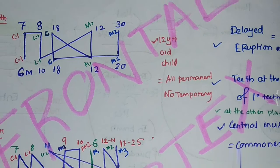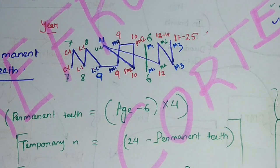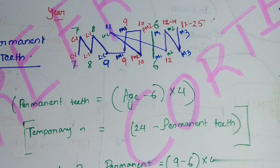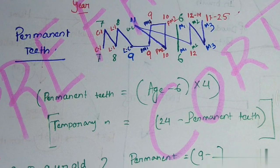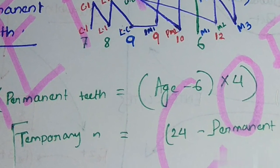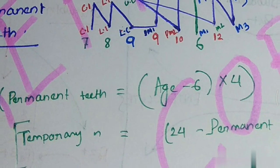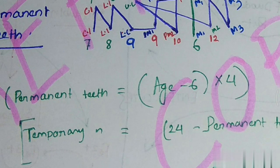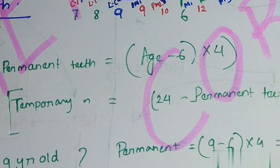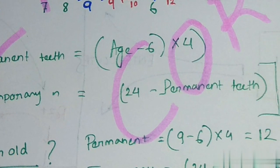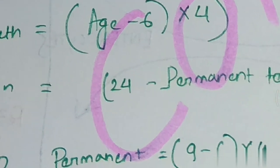Before age 12 there is a formula to calculate the number of permanent and temporary teeth in mixed dentition. To calculate permanent teeth: subtract 6 from the age, then multiply by 4. To calculate temporary teeth: subtract the number of permanent teeth from 24.